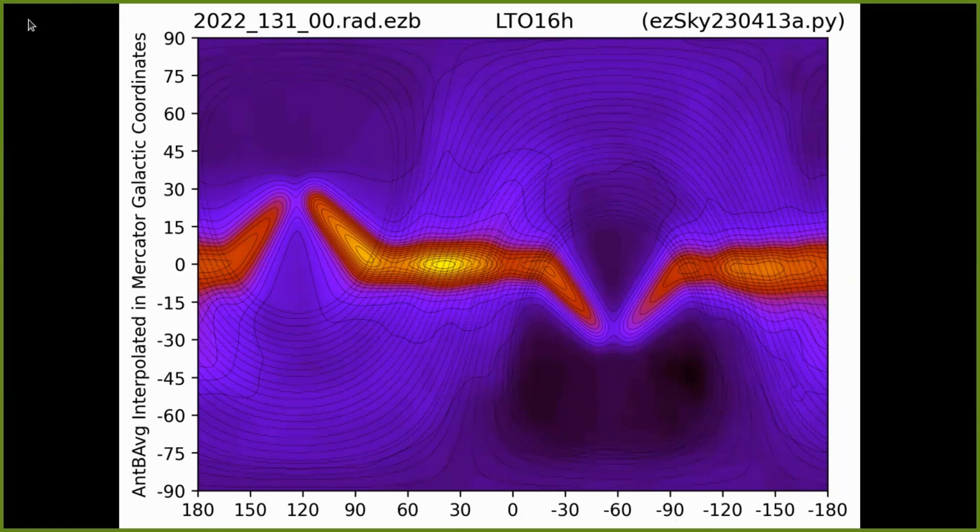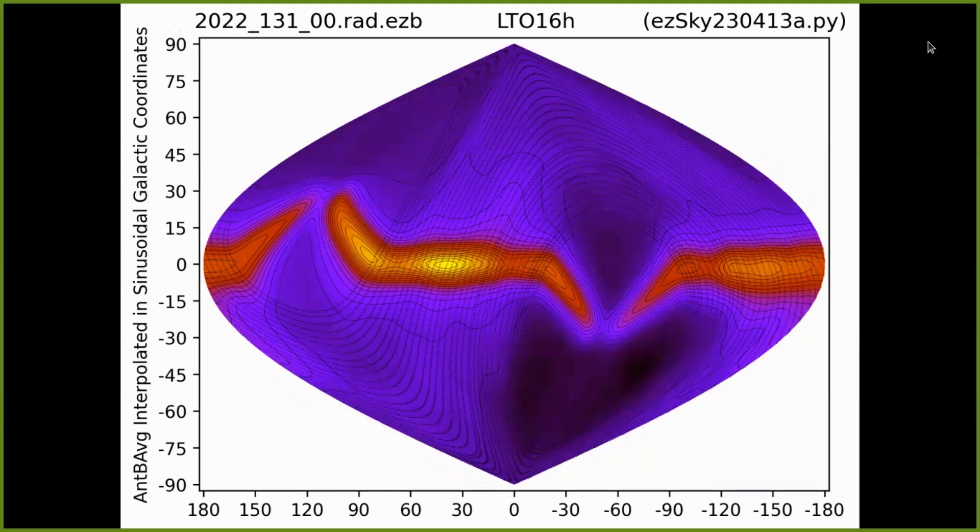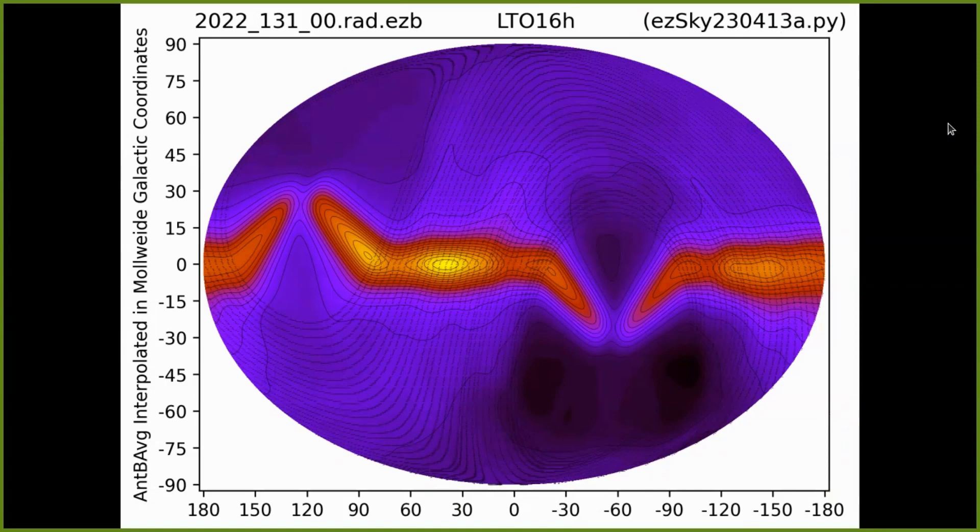But this plot represents the view from inside a sphere, and this top line is actually all one point. As if pulling a belt through the top line of points, we can represent the sky with a sinusoidal plot. But the professionals don't like that sharp point at the top and the bottom. So with more math, Ezra can plot the radio sky with a Mollweide projection.